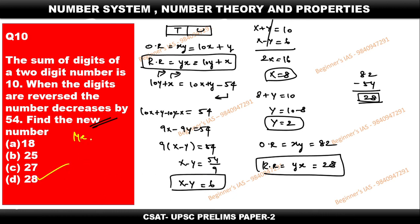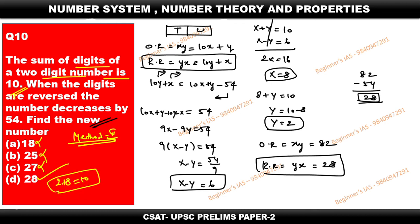We also have Method 2. For data interpretation problems we need the proper procedural method, which is Method 1. But if the question is not dealing with data interpretation, we can use a direct method. Since the sum of the two-digit number's digits is 10, just check the options: the first option's digits sum to 9 — eliminate. Next, 2 plus 5 is 7 — eliminate. Then 2 plus 7 is 9 — eliminate. Only 2 plus 8 equals 10, so D is the right answer. Please try to go through this. Thank you all.